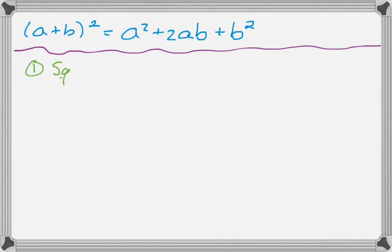The way that I learned this was, first you square the first, so the first is right there. Next you multiply them together.